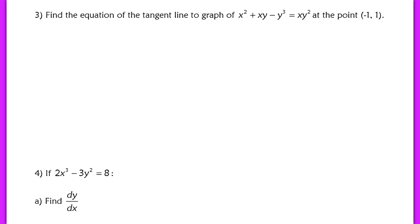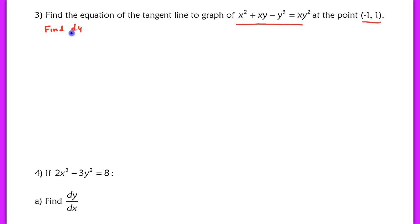In example 3, we find the equation of the tangent line to the graph of this implicit equation at the point negative 1, 1. This equation cannot be written in explicit form, so we use implicit differentiation. We've found equations of tangent lines before using the same process — we need to find the derivative to get the slope of the tangent line.